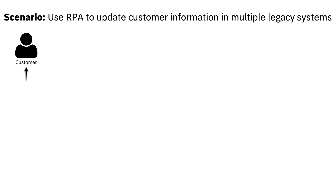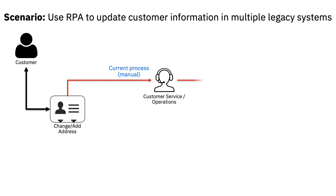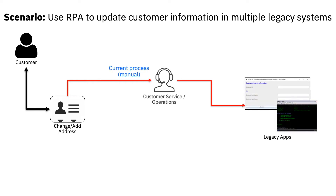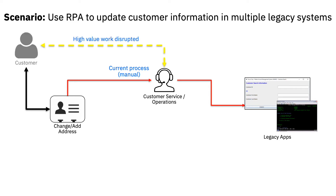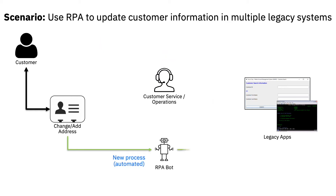Here's the scenario. When a customer submits an address change request via the company's website, it's manually entered in the company's legacy systems since APIs aren't available. This task is repetitive, time-consuming, error-prone, and of low value to the team's time. With RPA, Isaac can build a bot to offload this work and free his team to focus on onboarding new customers and troubleshooting operational issues.